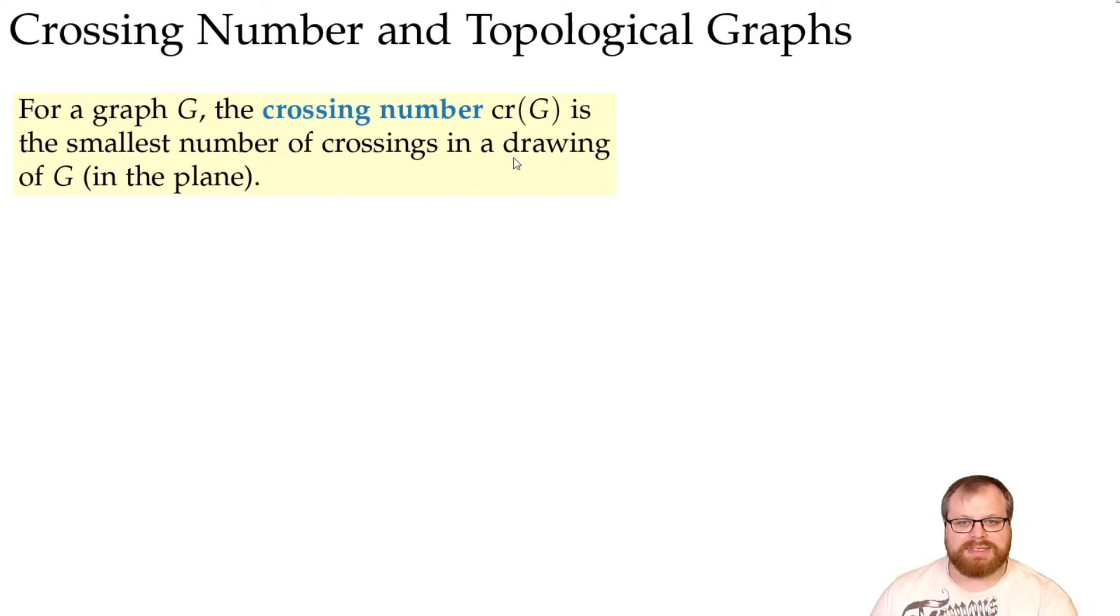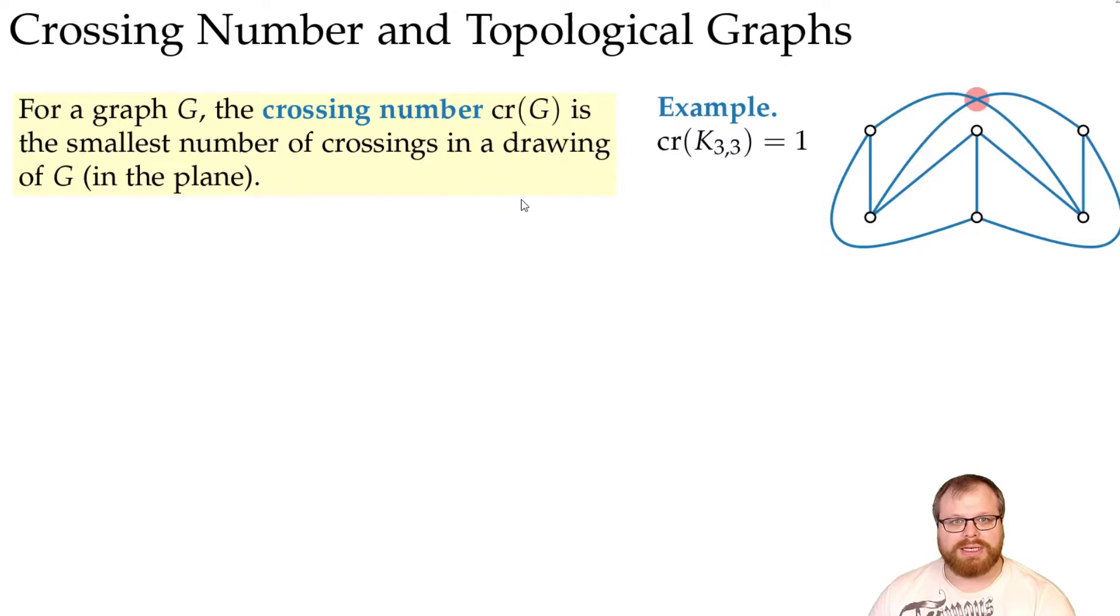For planar graphs, this is clearly zero, but we also know for example for the K33, it's non-planar, so it needs at least one crossing, and we can draw it with one crossing, so the crossing number is one. And the same also holds for the K5.